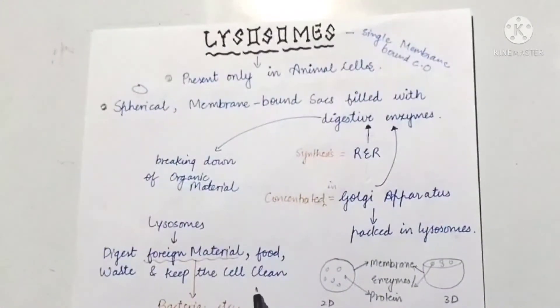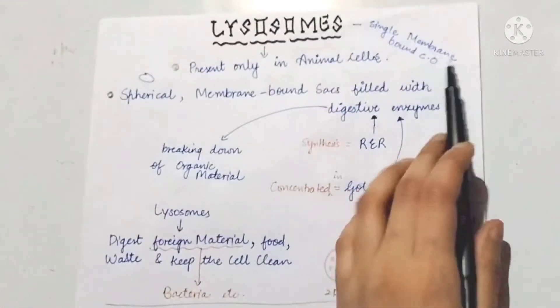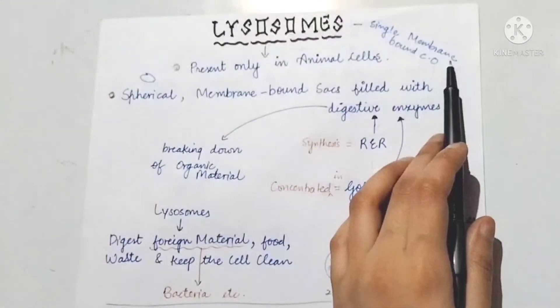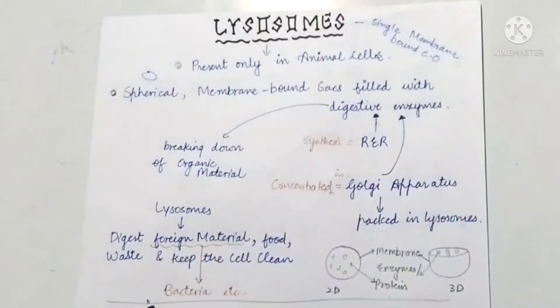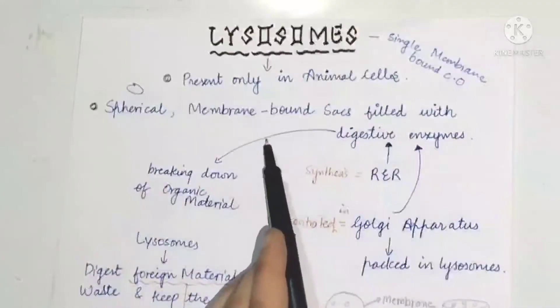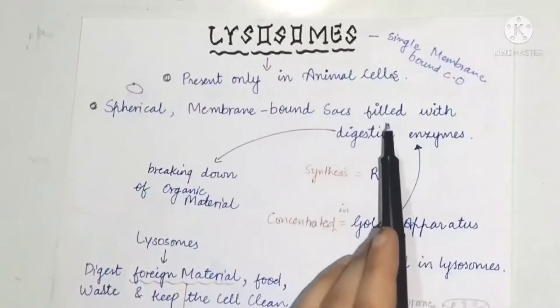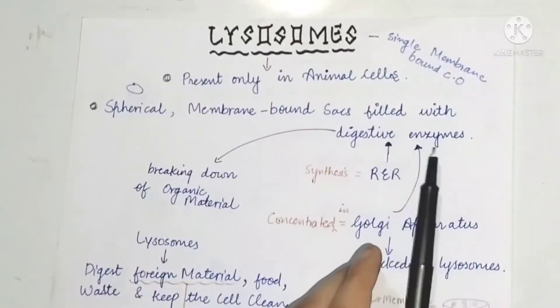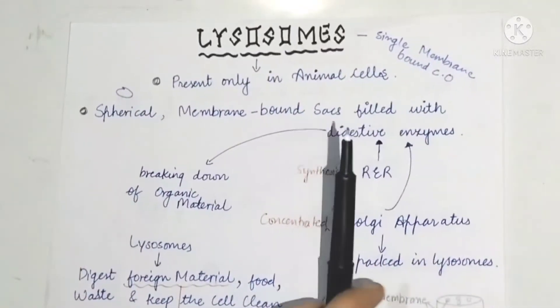Lysosomes are single membrane-bound cell organelles — they are surrounded by a single membrane and are filled with digestive enzymes.